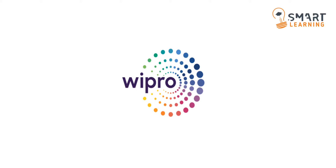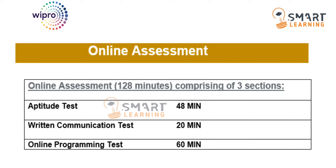The test duration is 128 minutes, comprising three sections. The first is an aptitude test, the second is a written communication test, and the third is an online programming test. The duration for the aptitude test is 48 minutes, communication assessment is 20 minutes, and the online programming test is 60 minutes.